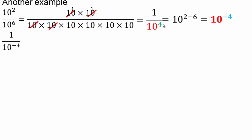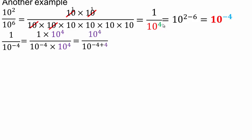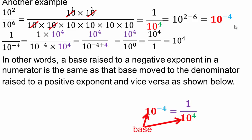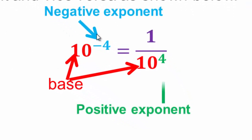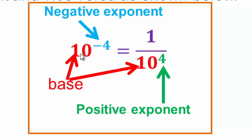What if I had 1 over 10 to the negative 4? Using equivalent fractions, multiply 10 to the 4 on both numerator and denominator, then apply the rules: 10 to the negative 4 plus 4 gives 10 to the 0, leaving 10 to the 4 over 1, which is 10 to the 4. So a base raised to a negative exponent changes it to a positive exponent — if it's in the numerator, it goes to the denominator with a positive exponent.